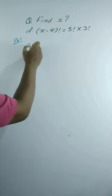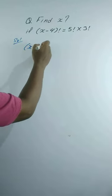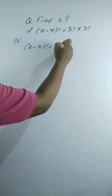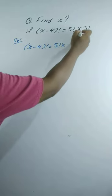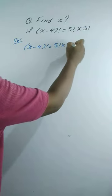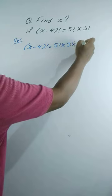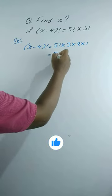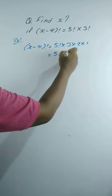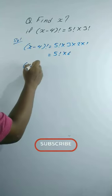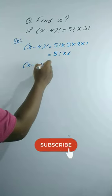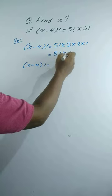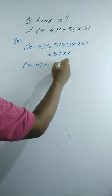Solution: (x minus 4) factorial equals 5 factorial times 3 factorial. We can write 3 factorial as 3 times 2 times 1, which equals 6. So this becomes 5 factorial times 6, which equals 6 factorial.